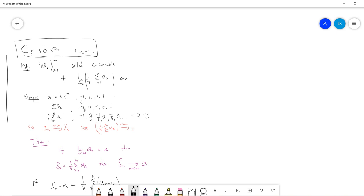and then you summation, you get minus 1, 0, minus 1, 0. And then you do the Cicero, then you get minus 1 divided,